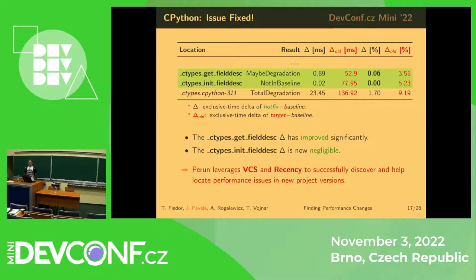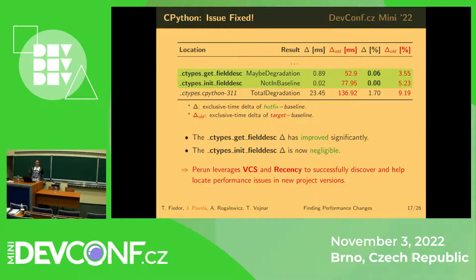We've learned that Perun leverages version control systems and the recency principle to successfully discover performance issues and guide developers to the possible root cause of the problem.